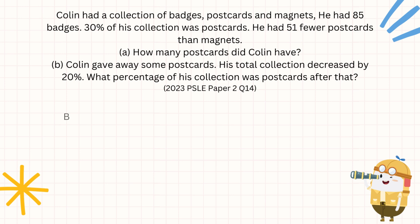We have our badges, postcards, and magnets, where postcards takes up 30% of the total. If we compare our magnets to postcards, we have 51 fewer postcards than magnets. If we want to find magnets, we can just add 51 instead. So magnets = 30% of total plus 51.